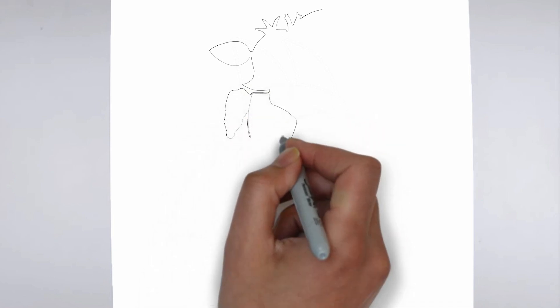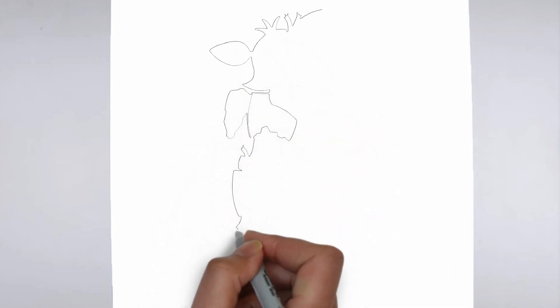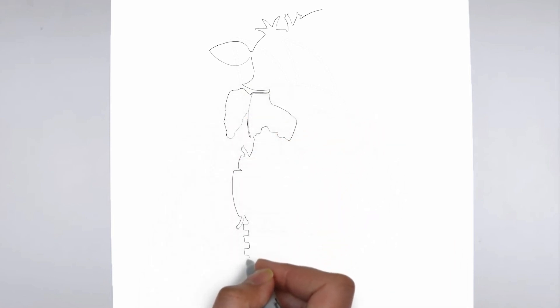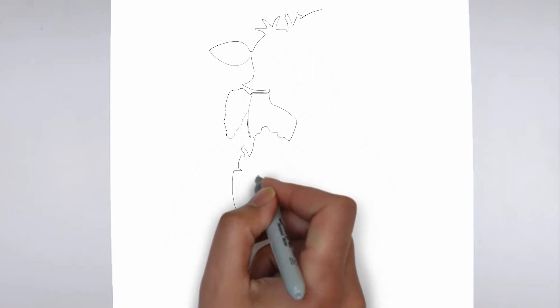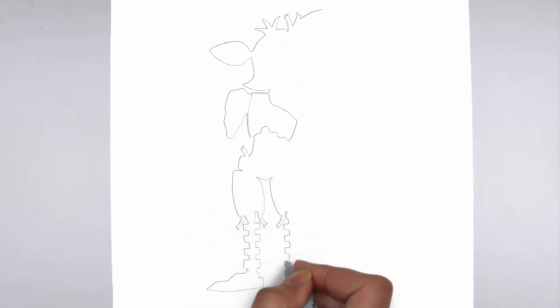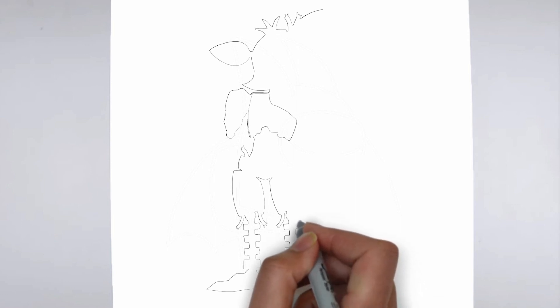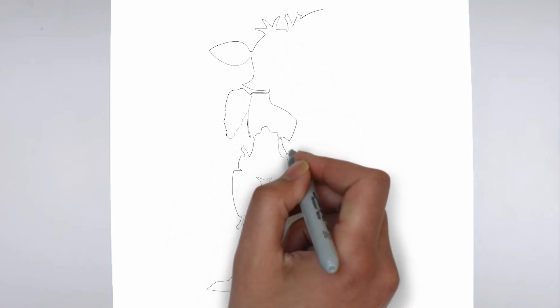First, we'll begin by sketching the basic shape of our subject. Make light, loose strokes to establish the overall form and proportion. Don't worry about details at this stage — just focus on getting the basic shape right.